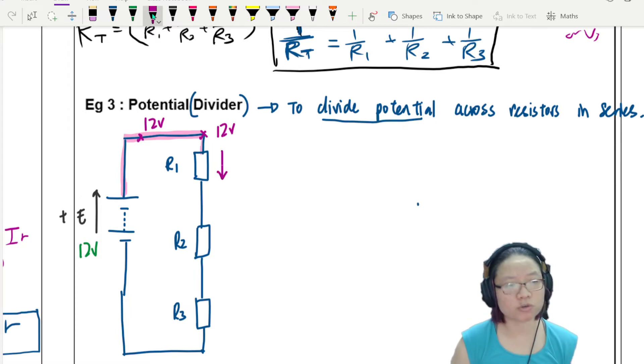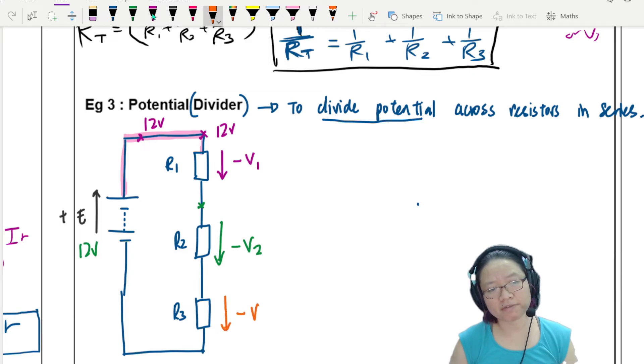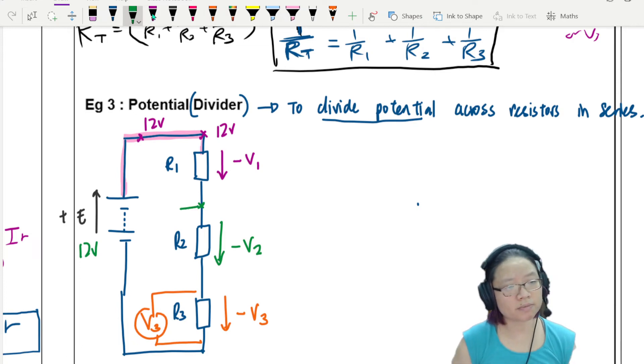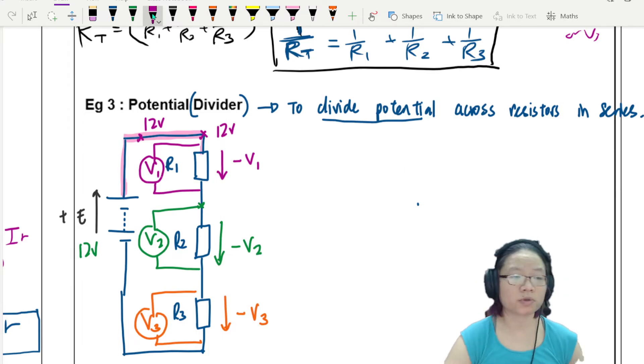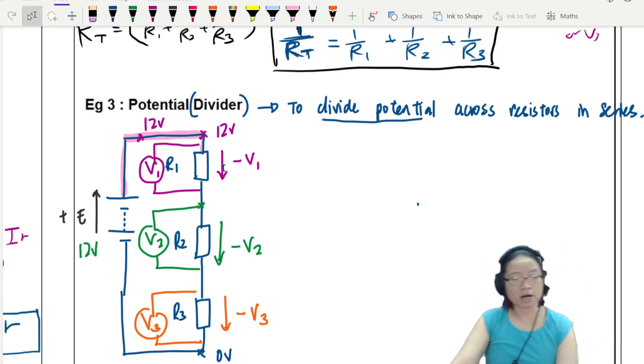So this one will drop. Let's say it drops by V1. And then by the time you reach here, this will be 12 minus V1. Because you minus. And then here to here, you drop by V2. And finally, here to here, you drop by V3. Say you install a voltmeter. The voltmeter here will actually measure V3. The voltmeter here will measure V2. And the voltmeter here will measure V1. Because we're measuring differences. So if you need numbers to help you, because by the time we reach down here, this will be zero volt.